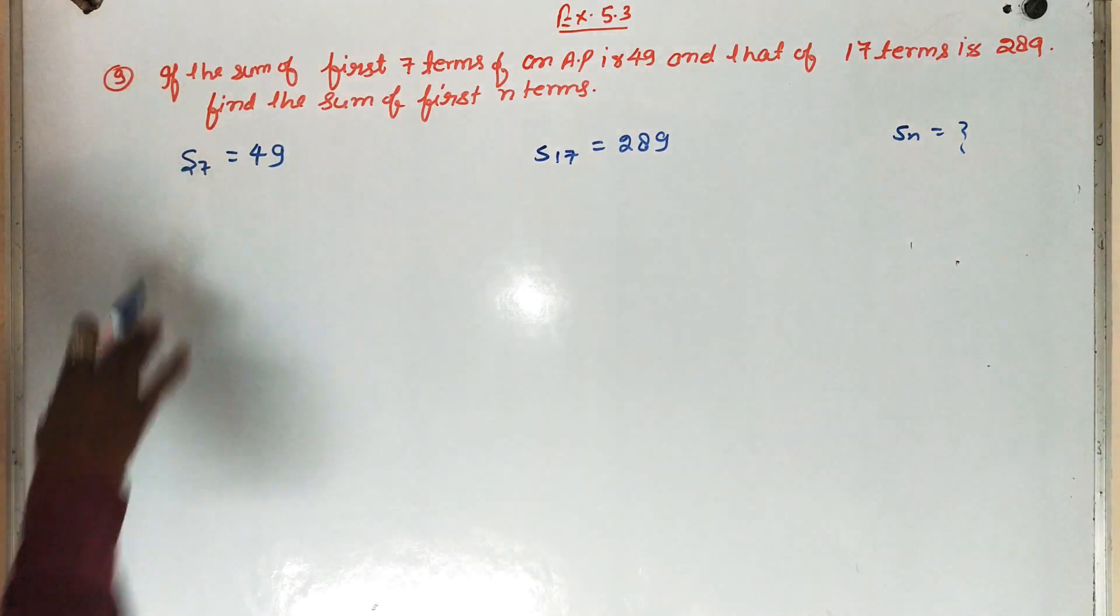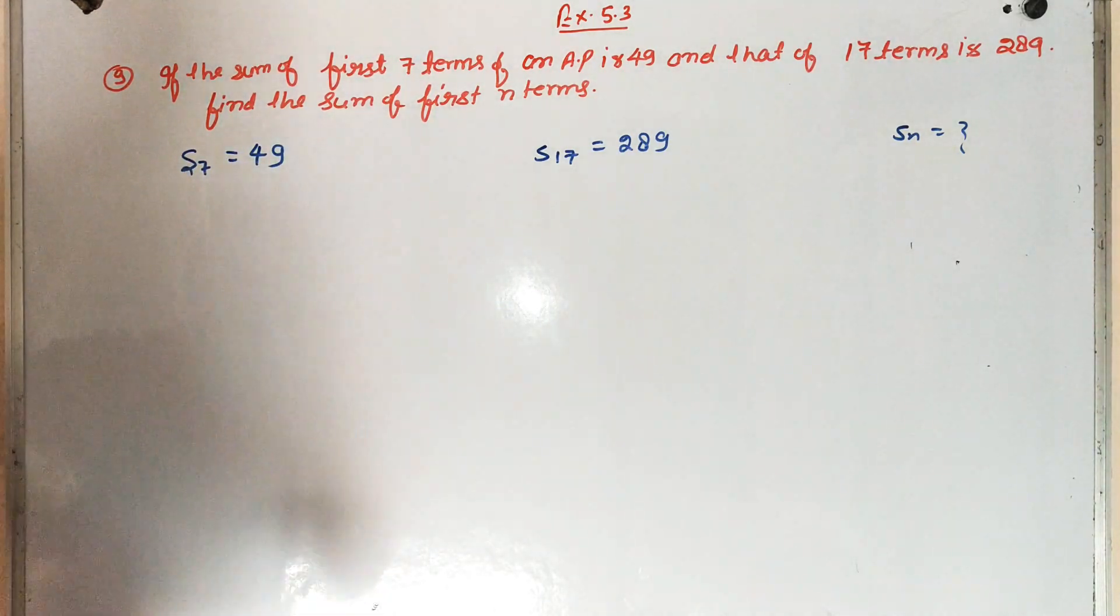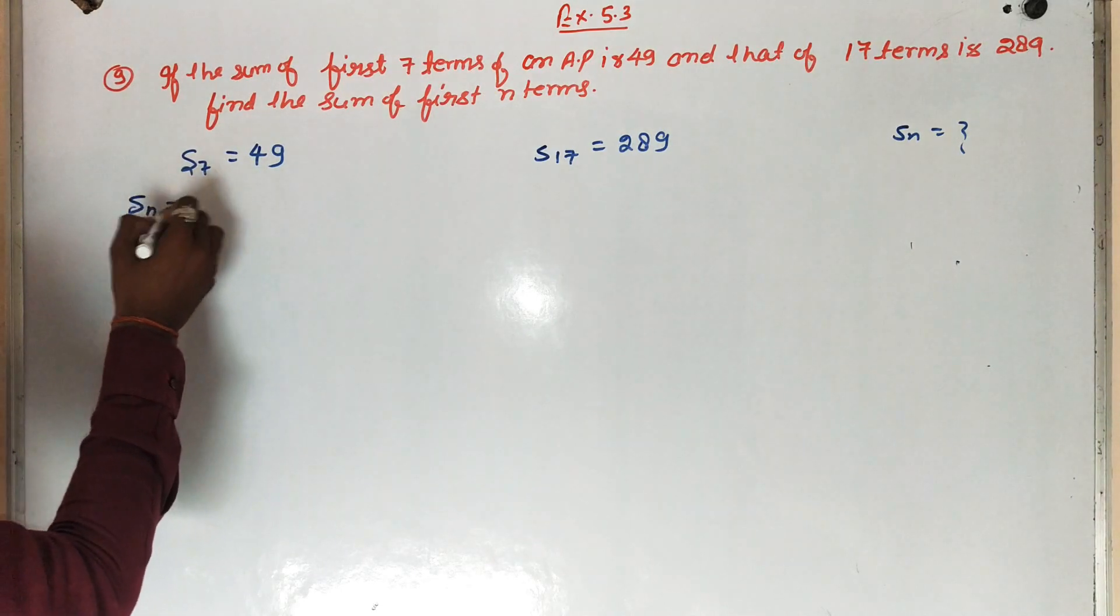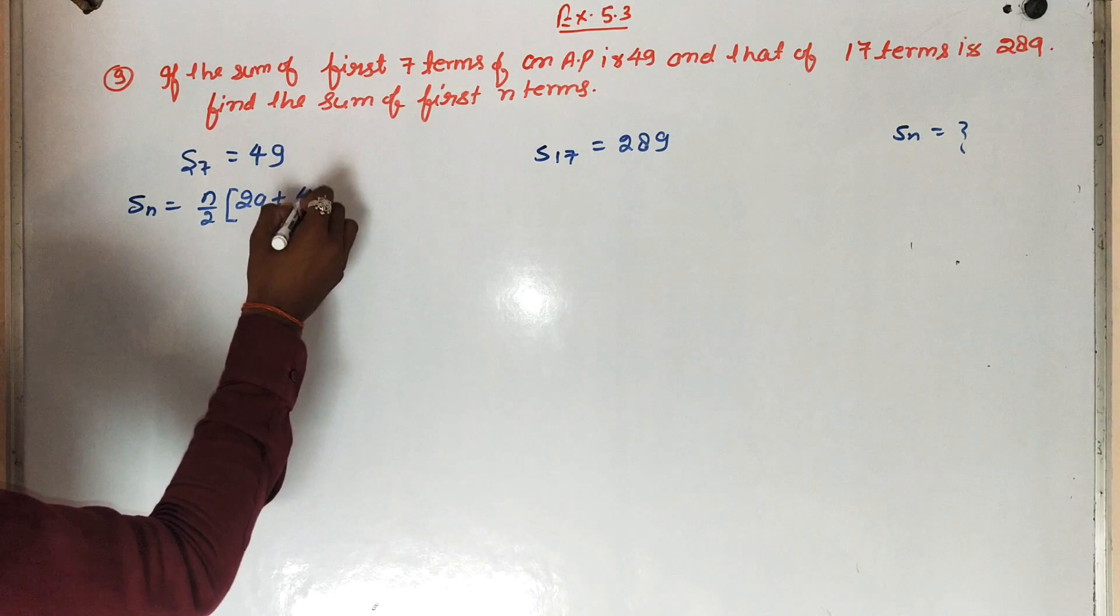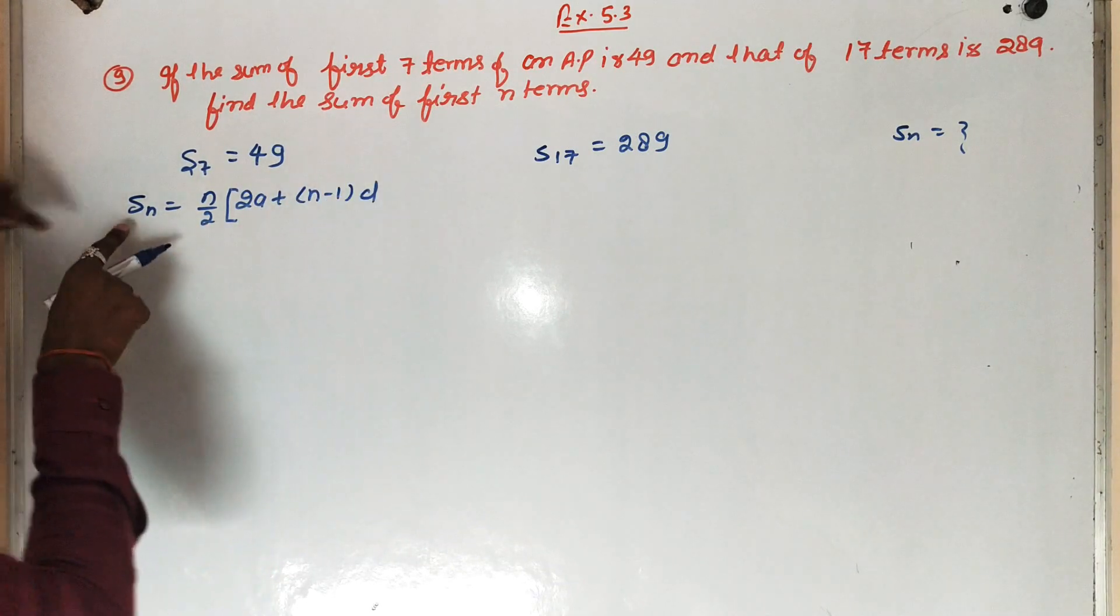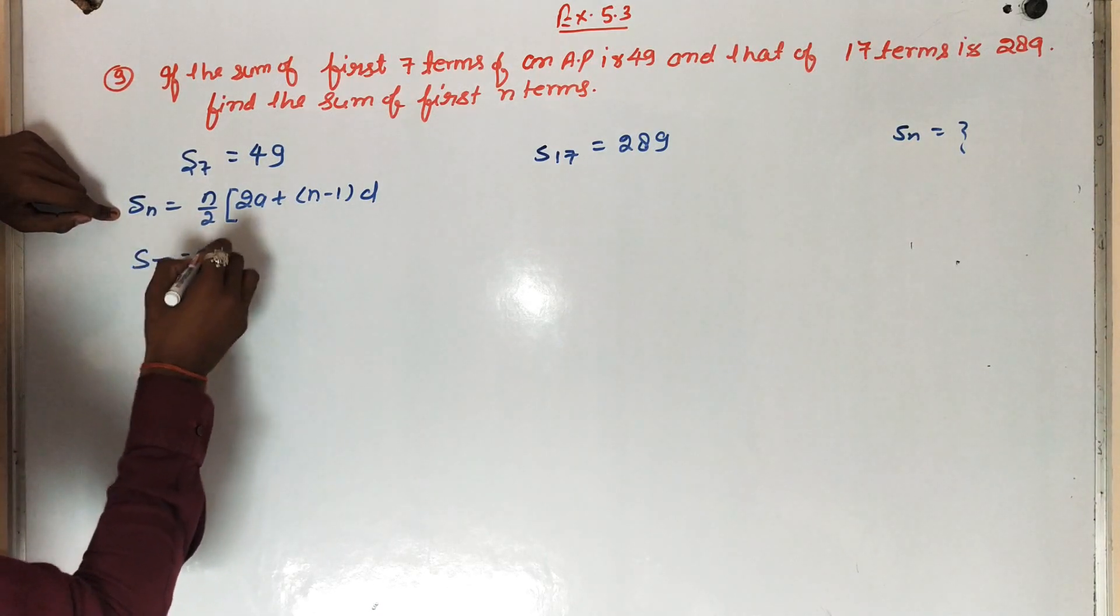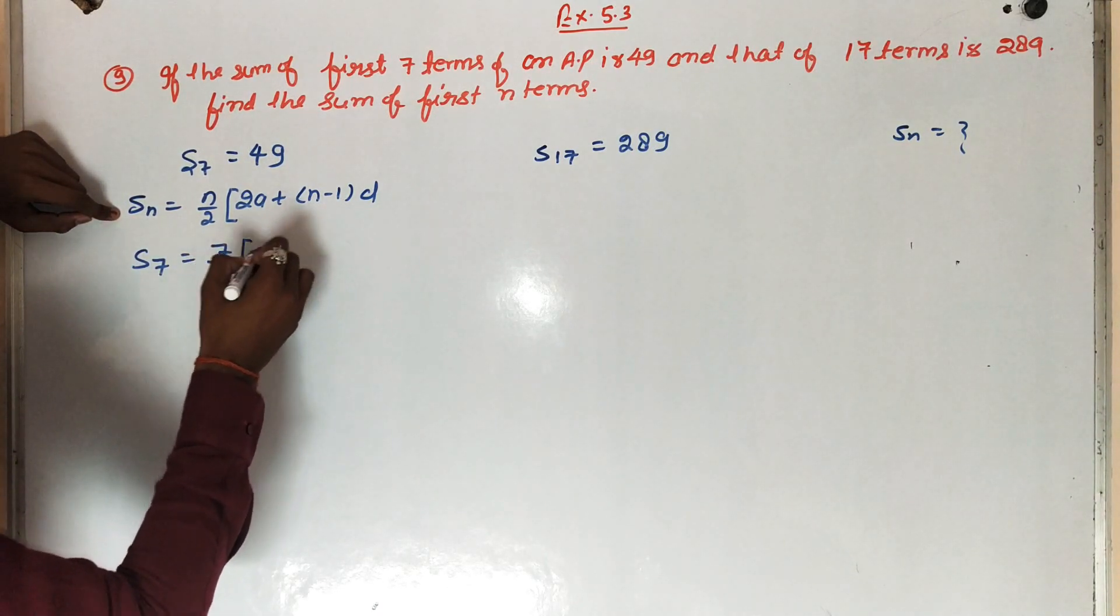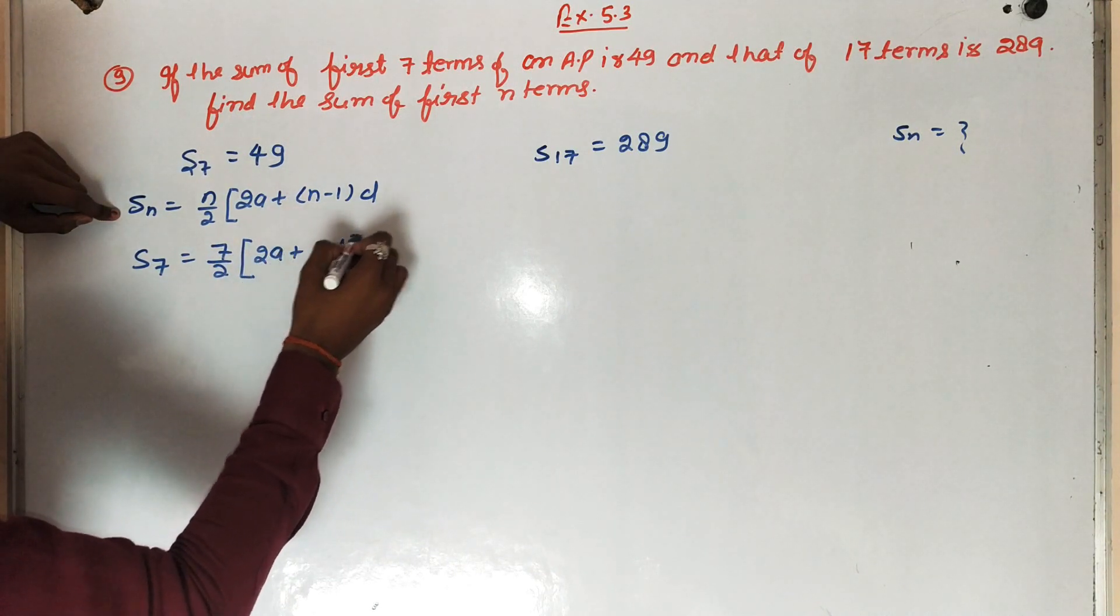Okay students, so for solving, open the formula. Sum of N terms is equal to N upon 2, 2A plus N minus 1 into D. Therefore sum of 7 terms is equal to 7 upon 2, 2 into A plus 7 minus 1, 6D.